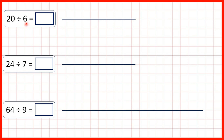Here we have some division problems, and for these divisions we're going to get remainders. That's because 20 is not in the 6 times table, 24 is not in the 7 times table, and 64 is not in the 9 times table.